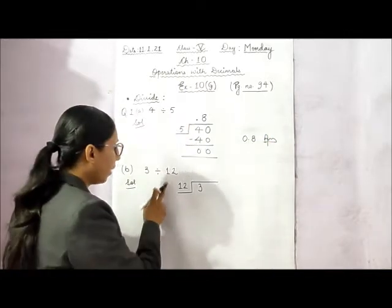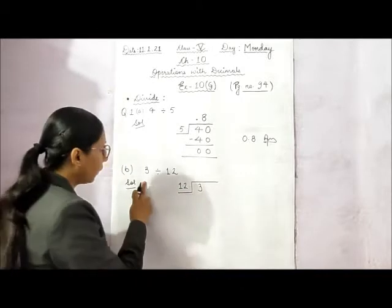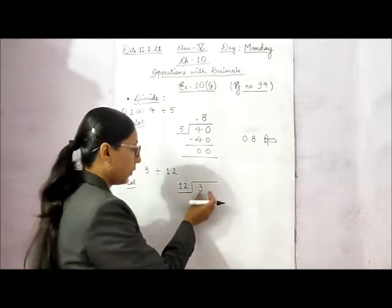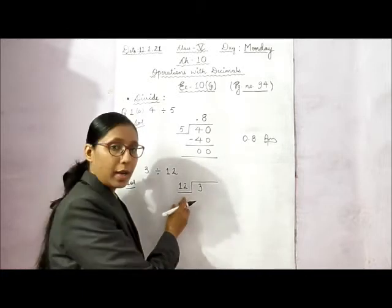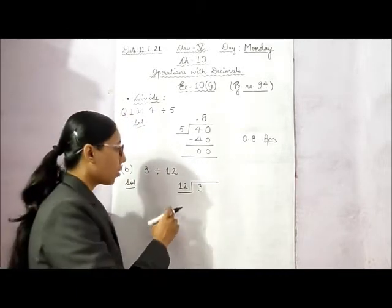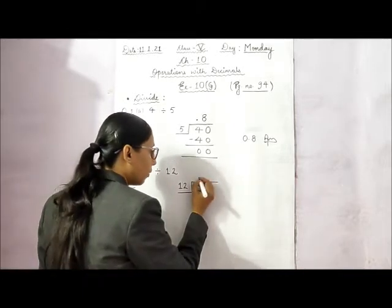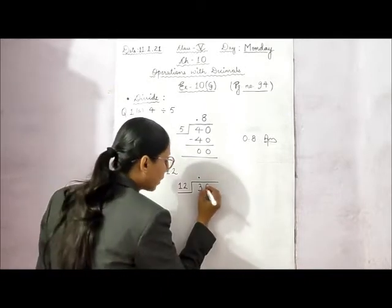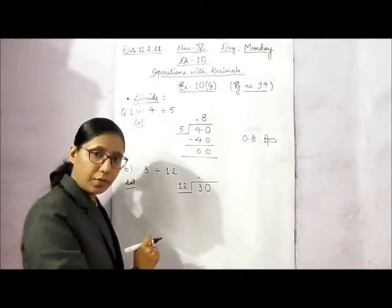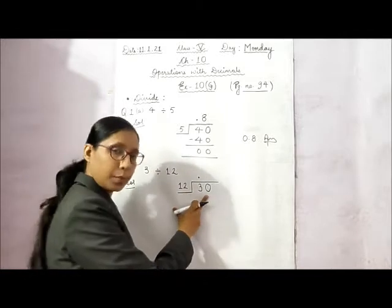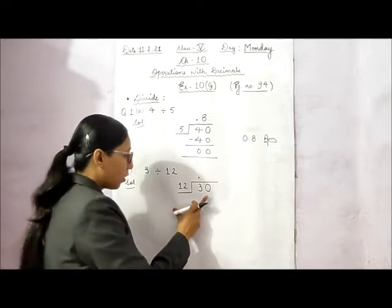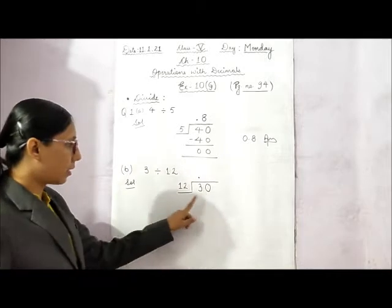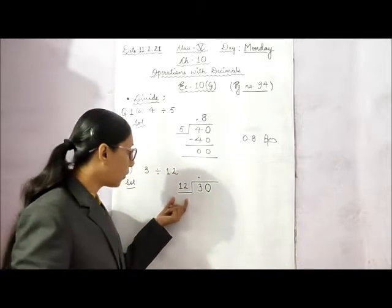In part B, 12 is the divisor and 3 is the dividend. Again the divisor is greater than the dividend, so the dividend is smaller. Again we are going to put one decimal point in the quotient part and one 0 in the dividend. Now this becomes a bigger number, so the dividend is greater than the divisor now. We are going to divide this 30 by 12, and in the table of 12, 30 never comes.